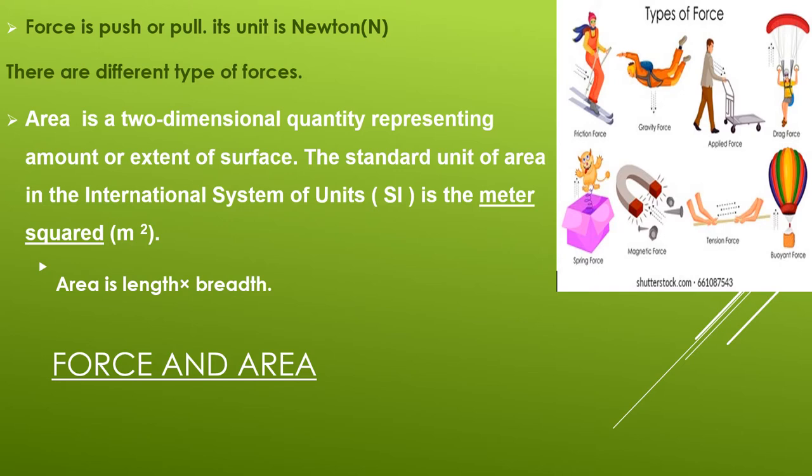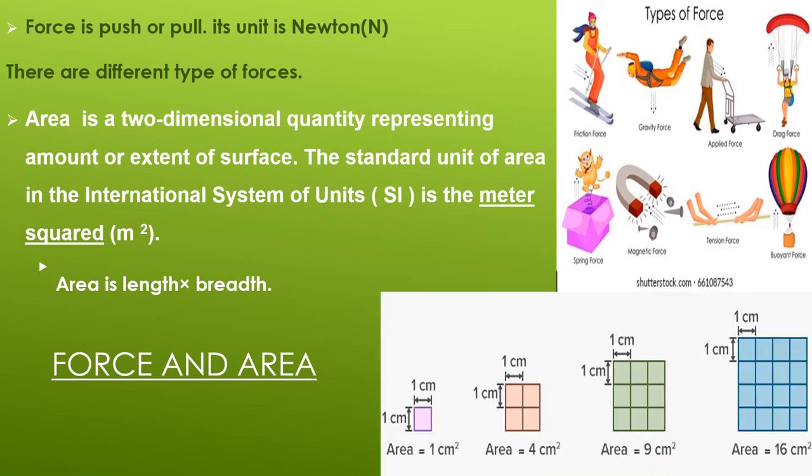You can see in this figure, in very first, there is one square box. One into one is one centimeter square which is the area of this square. In the next figure, there are total four squares. Two into two is four. The area of this figure is four centimeters square.